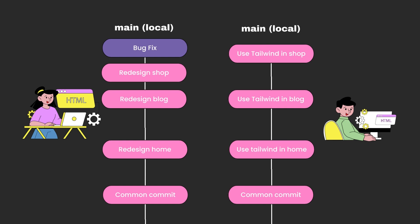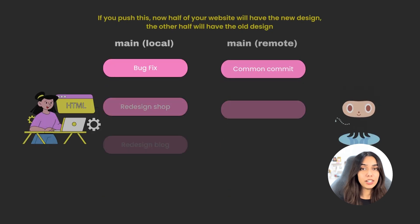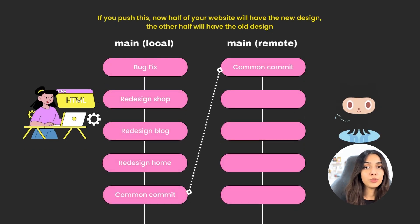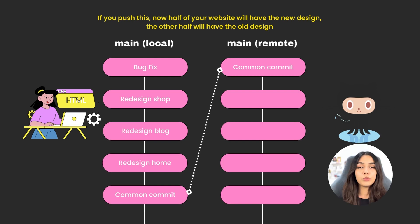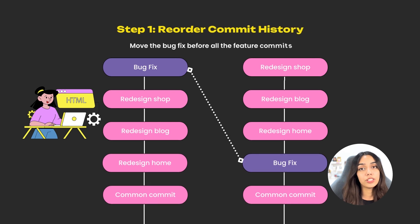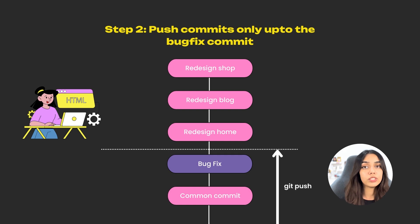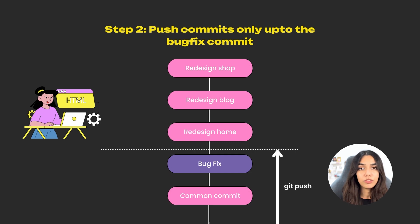Now you want to push this bug fix commit to remote, to GitHub, so that your friend can pull this bug fix and not come across the same bug during development. The problem is if you push the main branch to GitHub, all of your feature commits will also be pushed along with this bug fix, meaning only some pages will have the new design while others will have the older design. One option is to reorder your git history and move the bug fix commit before all feature commits, but this is a very complicated process.